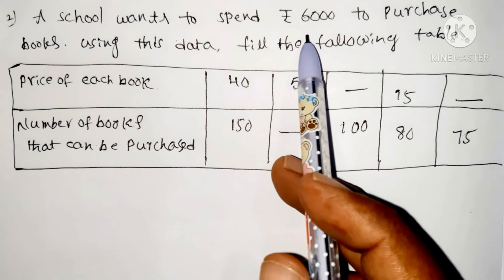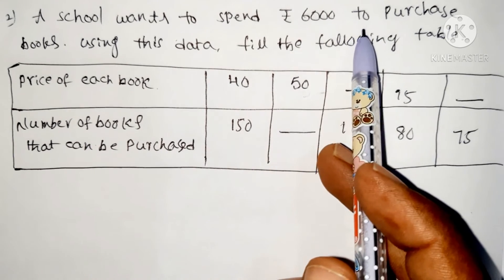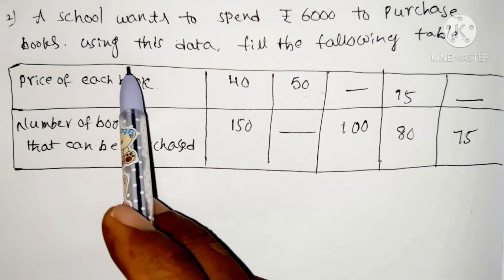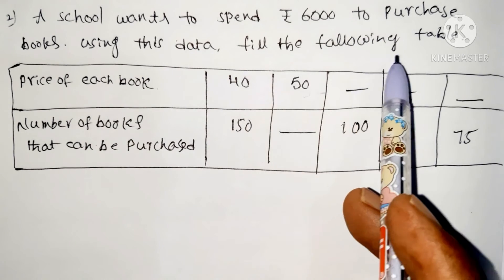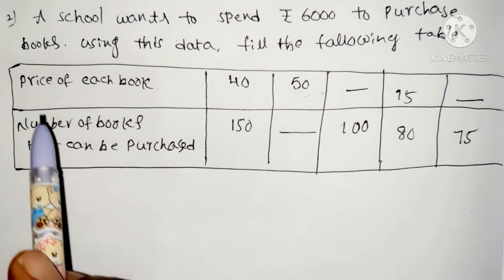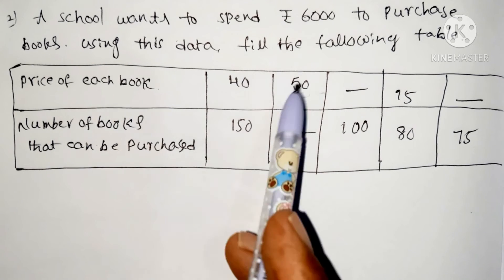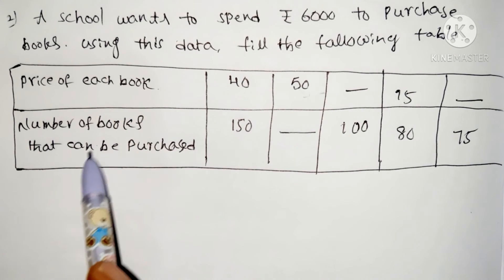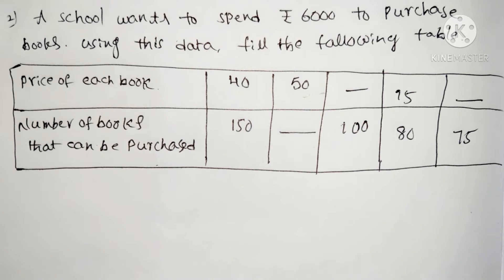This is the second question. A school wants to spend 6,000 rupees to purchase books. Using this data, fill in the following table.